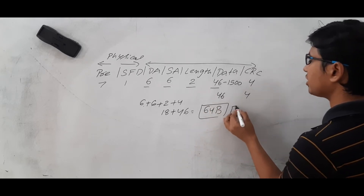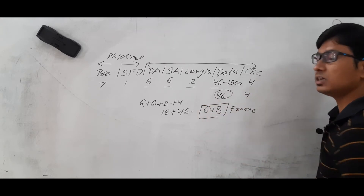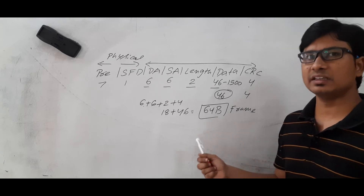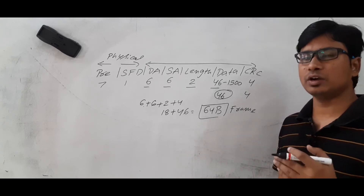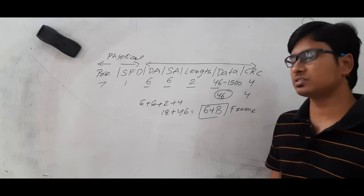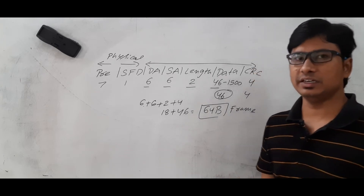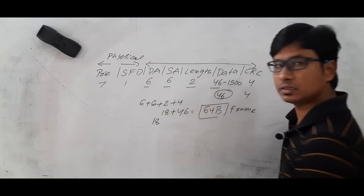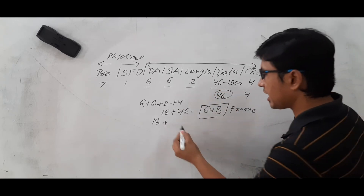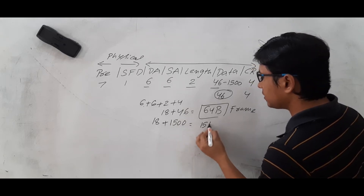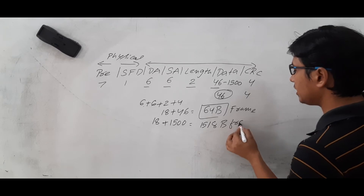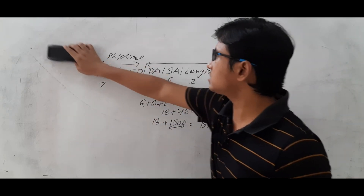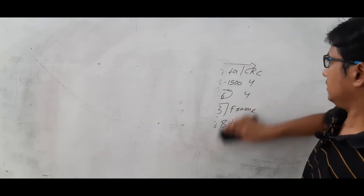You need a minimum of 64 bytes in standard Ethernet to detect a collision, because we are using the CSMA/CD collision detection mechanism. Coming to the maximum size of the frame, the fixed fields total 18 bytes, and the maximum data size is 1500 bytes, so the maximum frame size is 1518 bytes. That is the point I forgot to mention in the last video.